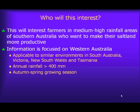This is likely to interest farmers in the medium to high rainfall areas of southern Australia who want to make their salt land more productive or even to just rehabilitate degraded land. The information I'm presenting is focused on Western Australia but is applicable to similar environments in South Australia, Victoria, New South Wales and Tasmania. We're talking about an annual rainfall typically greater than 400 millimetres where the main growing season is autumn through to spring.